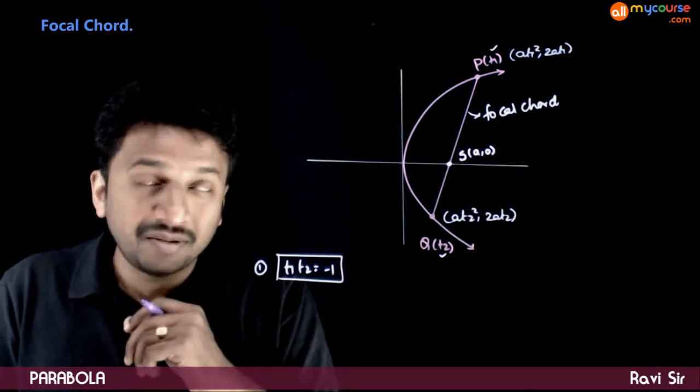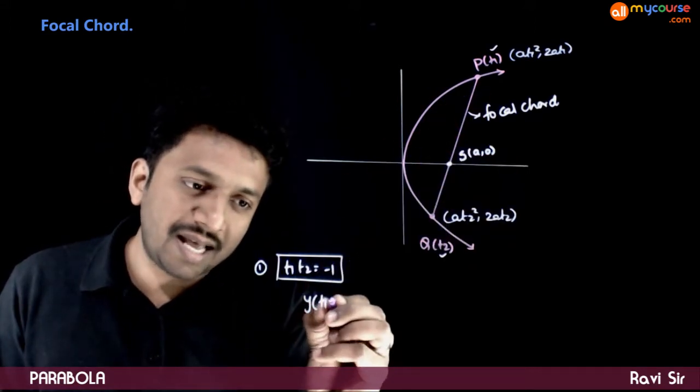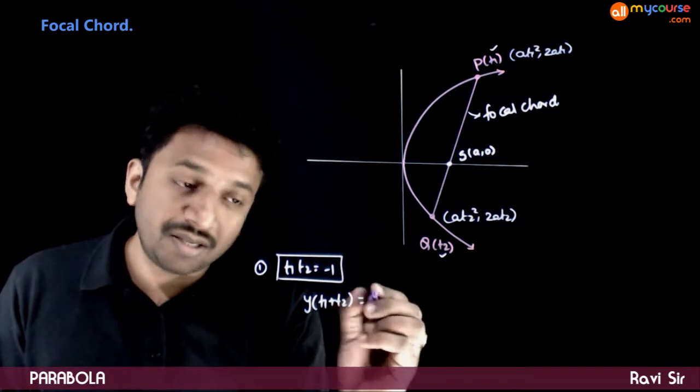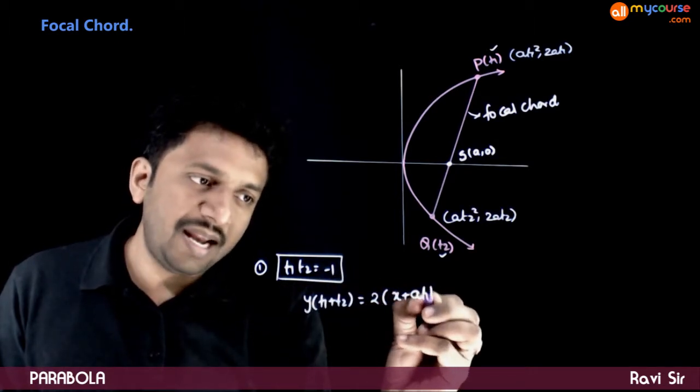Now what is the equation of chord? We have already derived this as y times (t1 plus t2) is equal to 2 times (x plus a t1 t2).